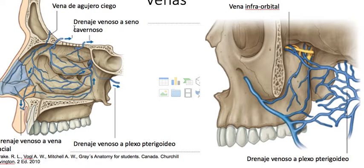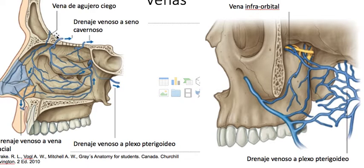Sometimes there is an emissary vein communicating the superior sagittal sinus with the foramen cecum.